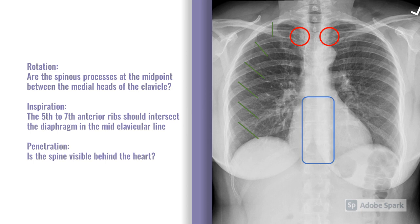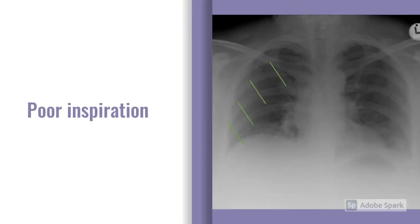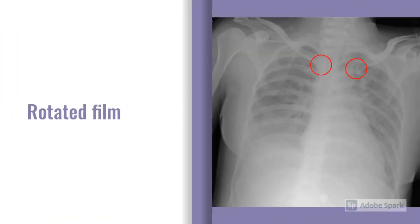With static pictures in exams, it's important to comment on the penetration. The first example shows a poorly inspired film — there aren't enough anterior ribs visible, and certainly not the 5th, 6th, or 7th dissecting the diaphragm in the mid-clavicular line. The second example shows a poorly rotated film: the red circles highlight the clavicle heads, and in the middle of the two clavicle heads there isn't a spinous process, which distorts the heart position and can make interpretation difficult.